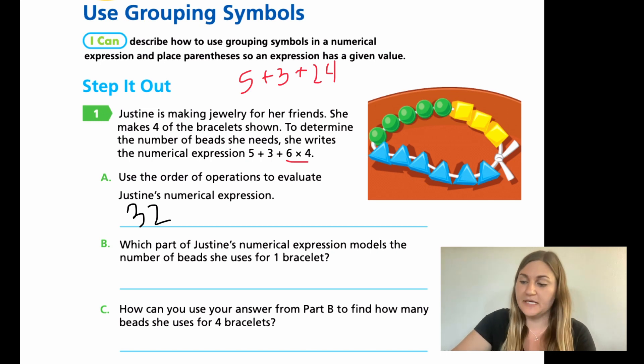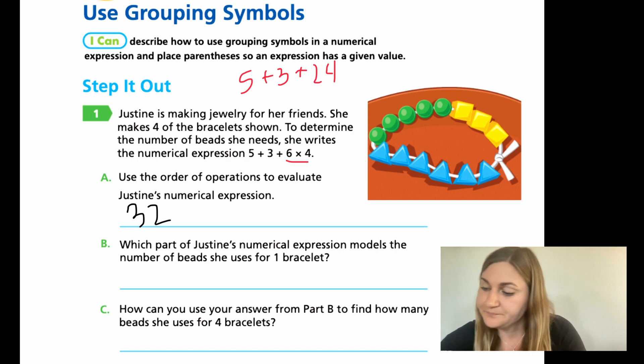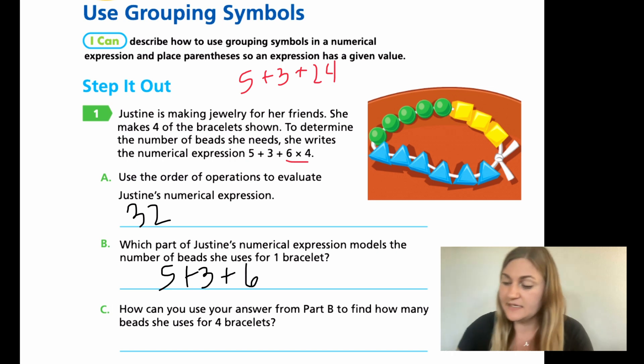Now moving down to B. Which part of Justine's numerical expression models the number of beads she uses for one bracelet? That's all of the addition, right? Because if you look up at the picture, we have 5 green circles, 3 yellow squares, and then 6 blue triangles. So that's all of the addition. So we have 5 plus 3 plus 6.